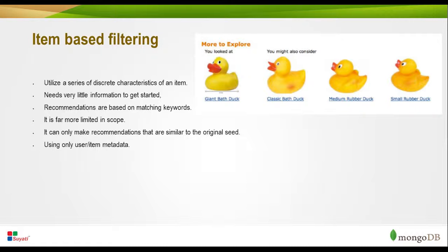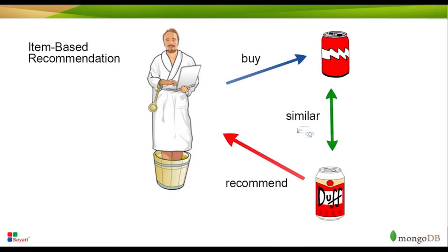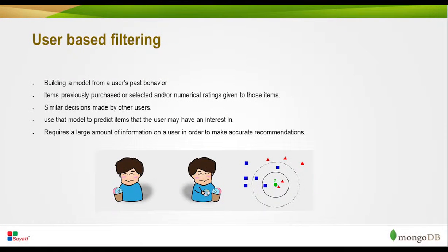There are some drawbacks to this approach: it is far more limited in scope and can only make recommendations that are similar to the original item. It uses only the item metadata. In the example of item-based filtering, the system recommends a new item on the basis of similarity, not considering other information about the user.